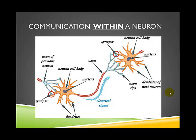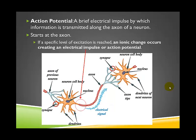Now we're going to start talking about how neurons are able to communicate. This part of the lecture is very technical information, and I will do my best to explain how this process works. It is very important in understanding how drugs are able to affect our body, for example. The term I definitely want everyone to know is action potential — a brief electrical impulse by which information is transmitted along the axon of a neuron.